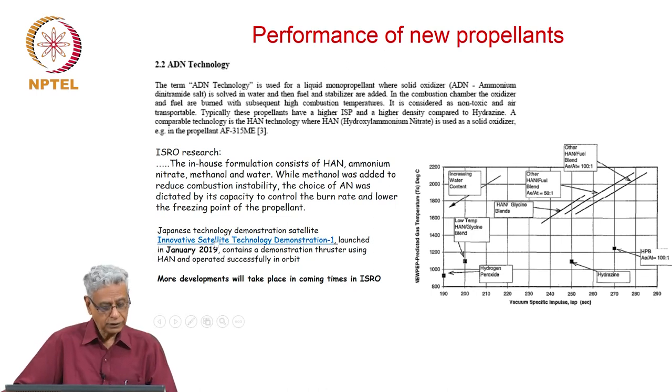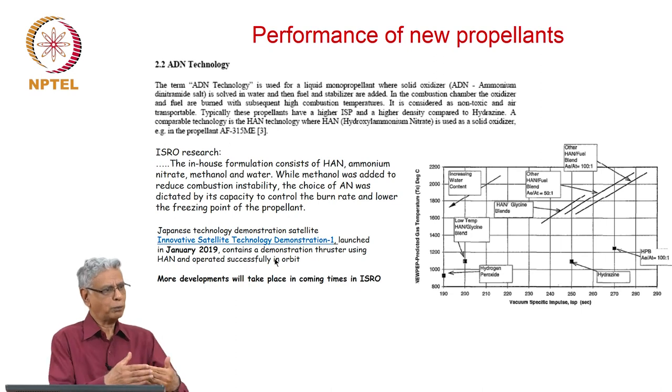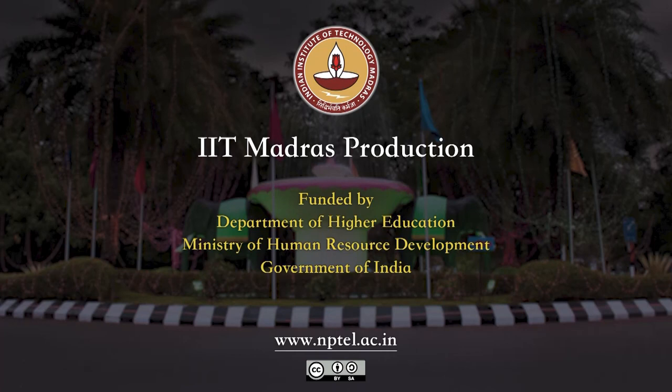In fact, in one of the systems already tested in Japan, there has been a demonstration thruster using HAN which has already successfully operated in orbit. These developments are taking place, and once this is done in many countries, there is general pressure to move into green propellants. That is also happening in our country and in the world. Thank you.